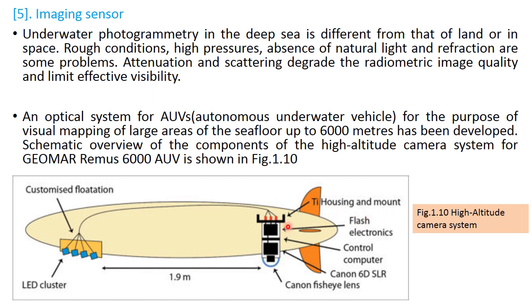The imaging system also includes flash electronics, a controlled computer, a mini microcomputer within the imaging sensor, a Canon 60D SLR camera, and a Canon 6i lens.